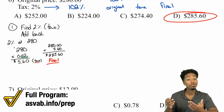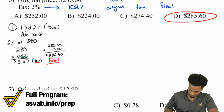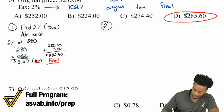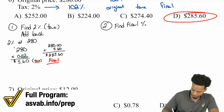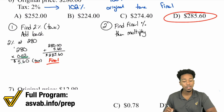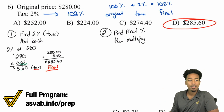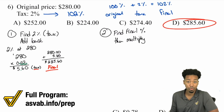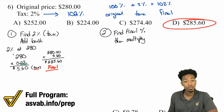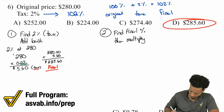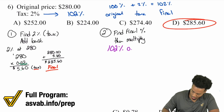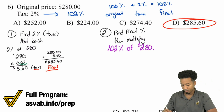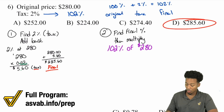Method number two: find the final percent and then multiply. We said earlier that if we add the 2% tax to 100%, we get 102%. So we need to find 102% of $280. That's what we're doing here — finding 102% of $280 in one single step.